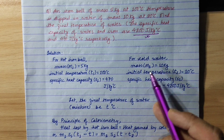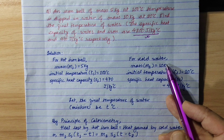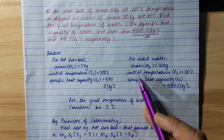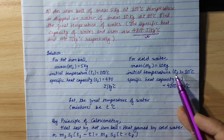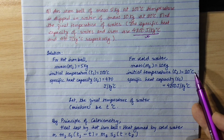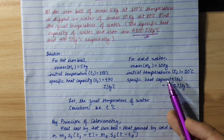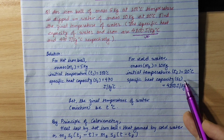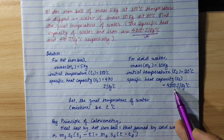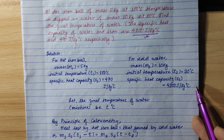For cold water: mass M2 is 10 kg, initial temperature T2 is 20 degree Celsius, specific heat capacity S2 is 4200 joules per kg per degree Celsius.